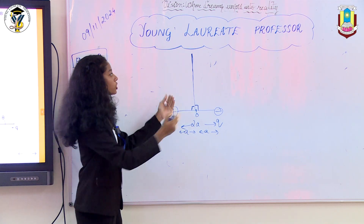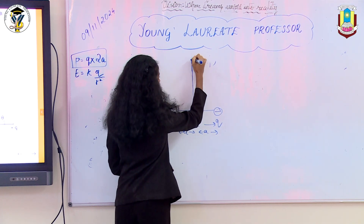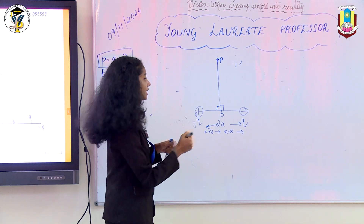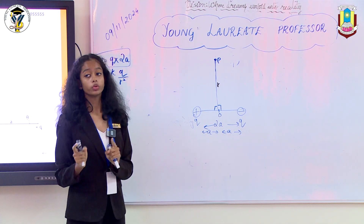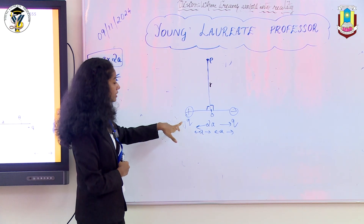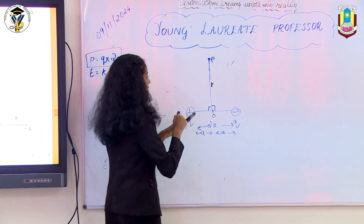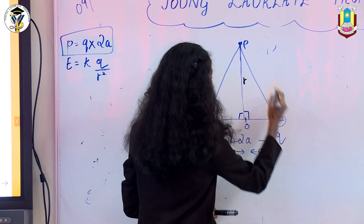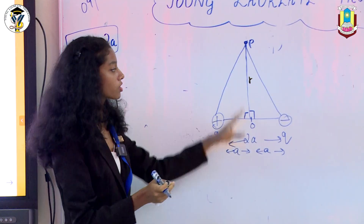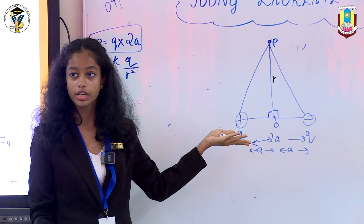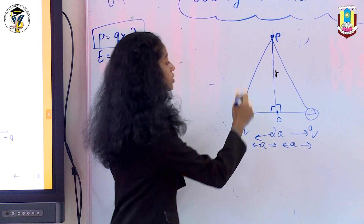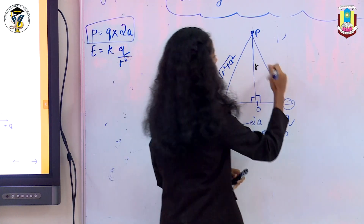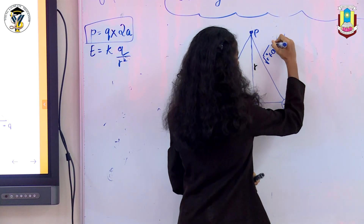Let's take a point P on the equatorial line at distance r from the center. We need to find the distance from each charge to point P. Using the Pythagorean theorem on the right triangle formed, the distance from each charge to the equatorial point is √(r² + a²). This applies to both charges.